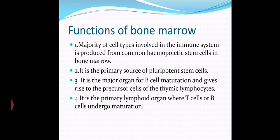As discussed in the previous lecture, the thymus is the primary lymphoid organ for T cell development. The bone marrow gives rise to precursor cells for thymic lymphocytes. Bone marrow is itself a primary lymphoid organ where T cells and B cells undergo maturation. Both T cells and B cells are immunocompetent cells that must undergo maturation before they can mount an immune response.